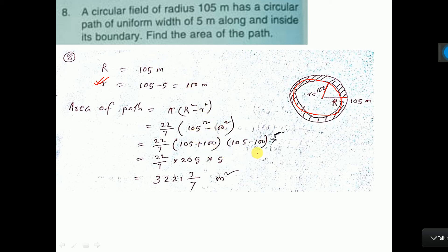So you put a plus b into a minus b formula, that is 105 plus 100 into 105 minus 100. So here you put 5 and here this plus this means 205.